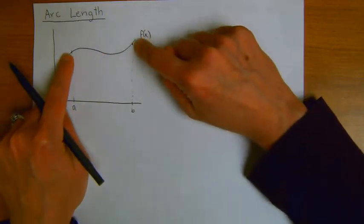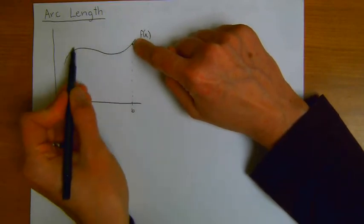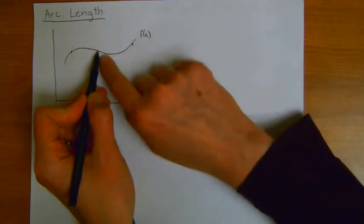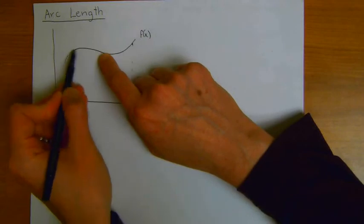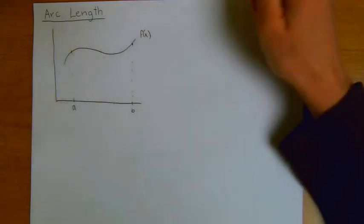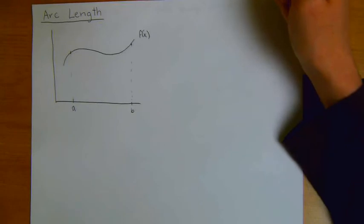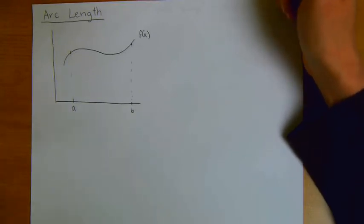We could approximate it by doing a straight line segment, and we know it squiggles a little bit, so we could be a little better than that, maybe doing a couple of straight line segments. And that's exactly the principle that we use, and we're going to formalize that with calculus techniques.